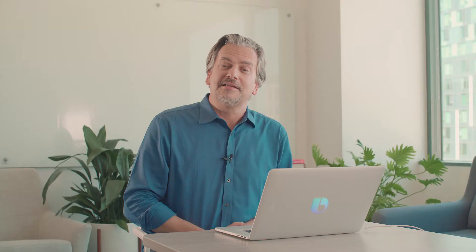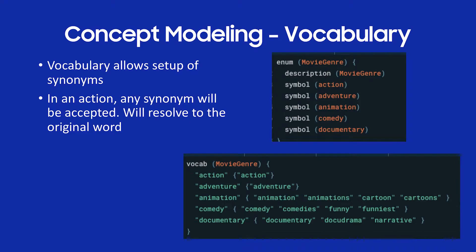To give a second example of concept modeling and vocabulary, here I have vocabulary for movie genres: action, adventure, animation, etc. As you can see, if I said 'cartoon,' Bixby would interpret that as animation, or if I said 'funny,' Bixby would interpret that as comedy. This is a really powerful thing that allows the user to speak naturally and allows Bixby to resolve that to a particular input you can understand in your code.